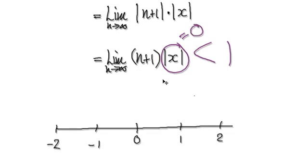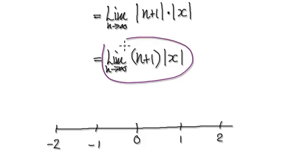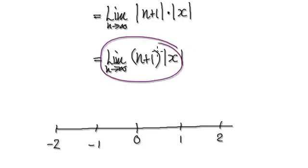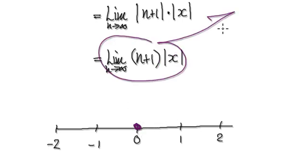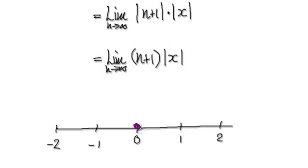So the domain for this function, you see, looking at this, the only time that this thing here will be less than 1 is when x here is equal to precisely 0. Anything else, and it will head towards infinity. So the domain here is the one number 0. That's our domain.